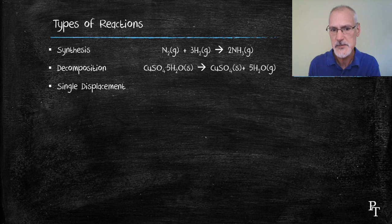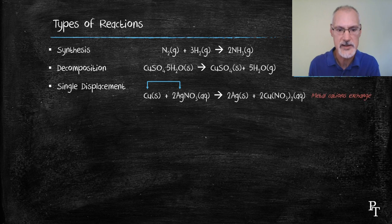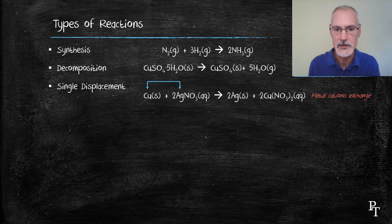In single displacement reactions, we have substances exchanging positions in the equation. In this case, copper and silver exchange positions to form silver and copper nitrate. The two metals have undergone an exchange.